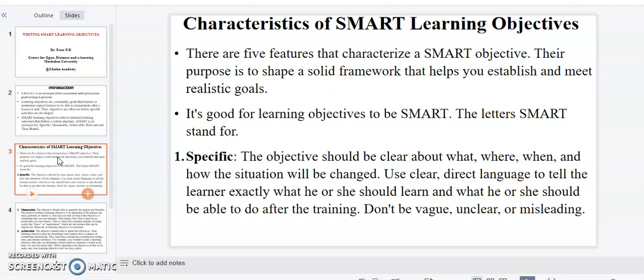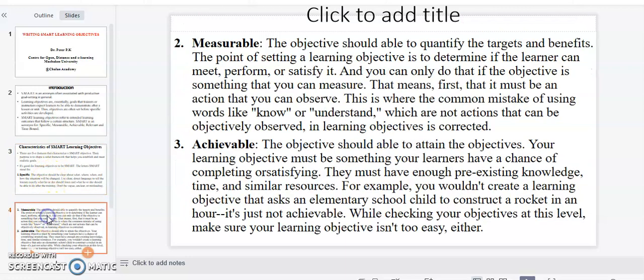Specific: The objective should be clear about what, where, when, and how the situation will be changed. Use clear, direct language to tell the learner exactly what he or she should learn and what he or she should be able to do after the training. You are encouraged as a teacher not to be vague, unclear, or misleading.